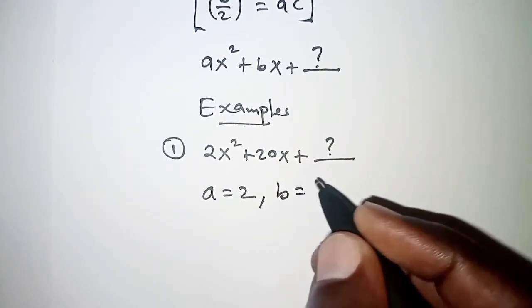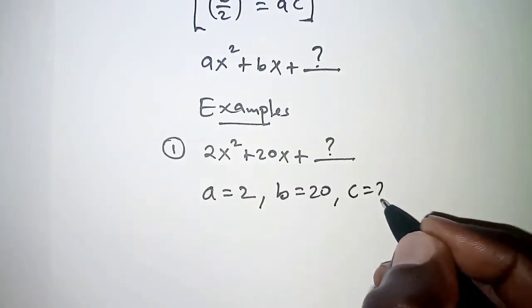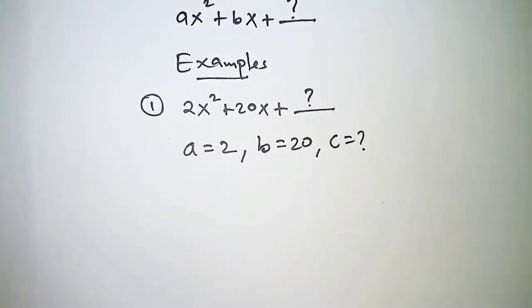b is the coefficient of x which is 20, and c is missing for this case. We will therefore apply this formula as follows.